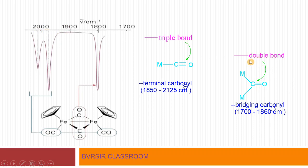The bridging carbonyl has a double bond between carbon and oxygen, with the metal forming a bridge. Bridging carbonyl has a stretching frequency in the range of 1700 to 1800 centimeter inverse. So the bridging type shows a lower value compared to the terminal type.